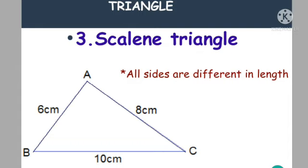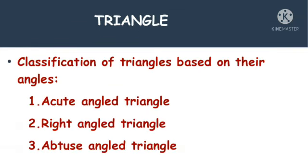So to summarize: an equilateral triangle means all sides are equal. An isosceles triangle has two sides equal and one side different. A scalene triangle has all three sides different.